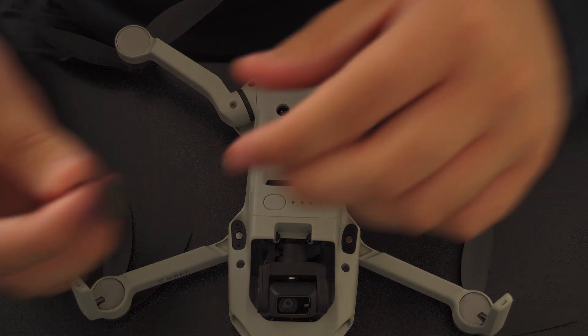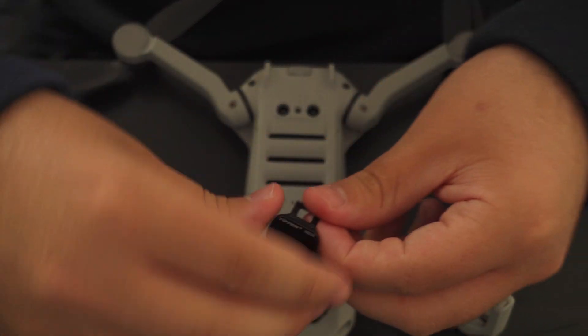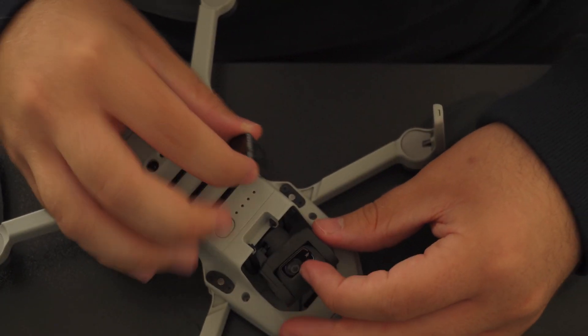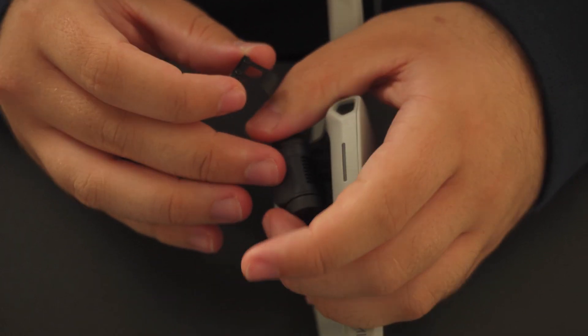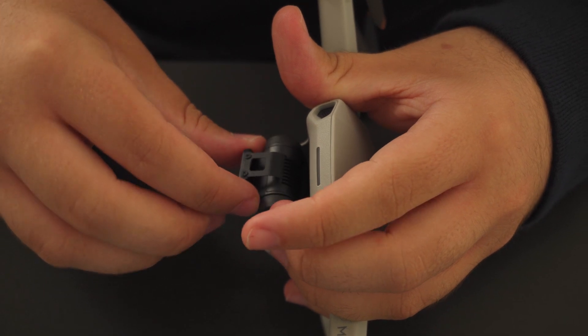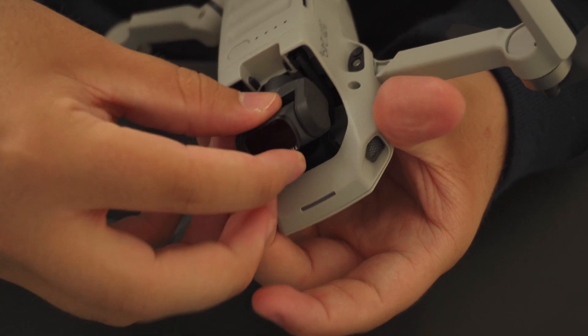So first let's just take a normal standard ND16 filter, put it on the same way you would the original Mini. You get the hooks into the grill, into the heat sink there, and then you clip it into the front.